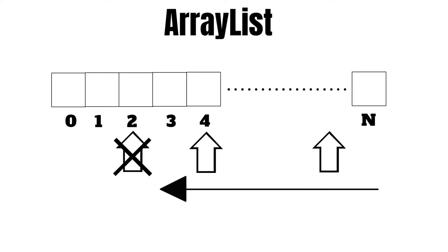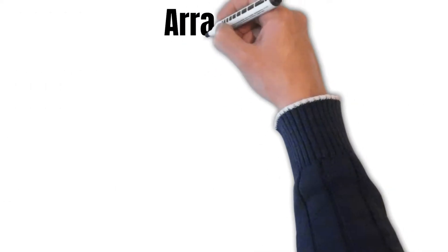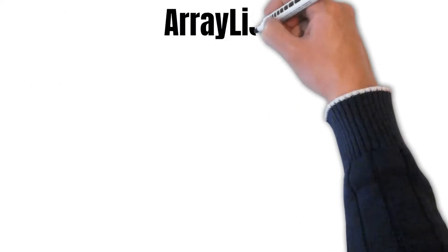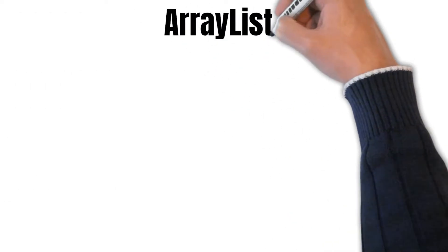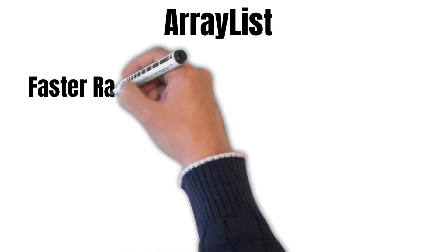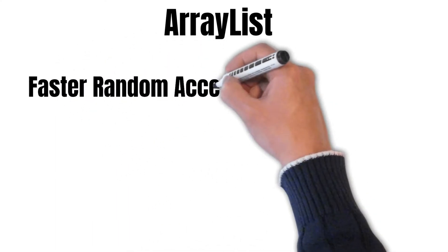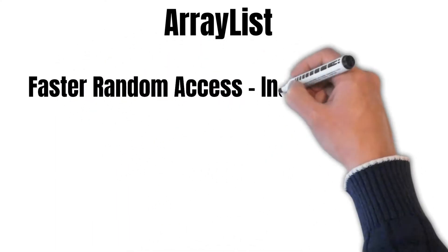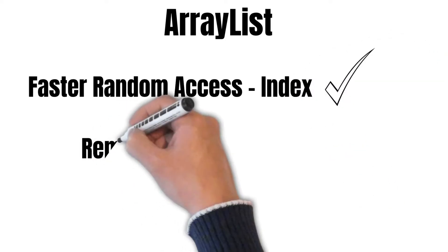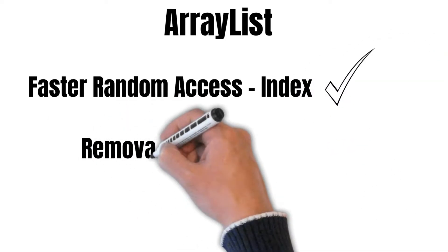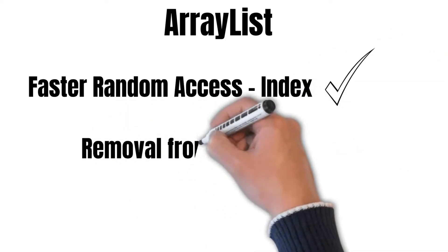Because internally it is implemented using arrays and it has to do shifting operations. So basically ArrayList is suitable for faster random access based on index, but it is unsuitable for removing or adding elements in between.